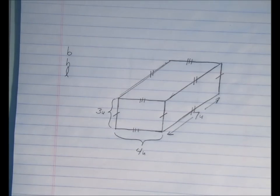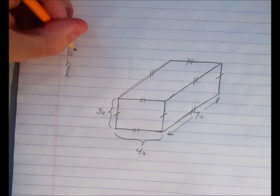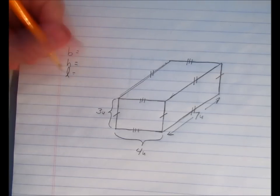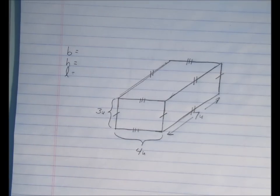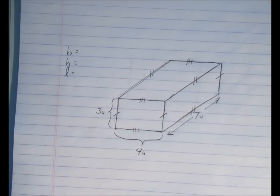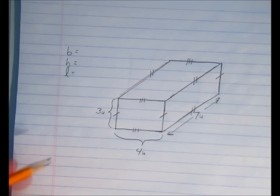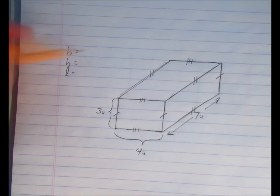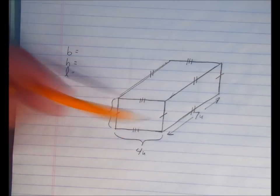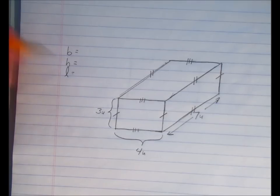You could also try length, width, and height — no problem with that either. It doesn't really matter which line you choose for each variable. What matters is that when you pick one, you keep consistent with it, so you always use that one as that variable. For example, it doesn't matter whether you pick three, four, or seven units for the base — it really doesn't matter.